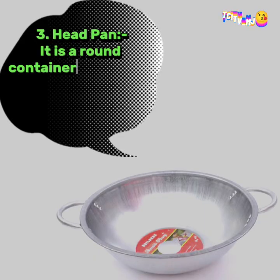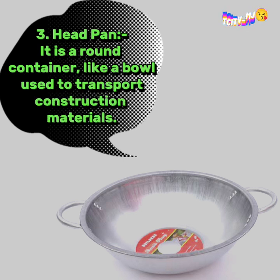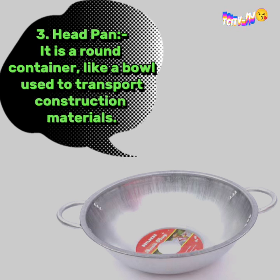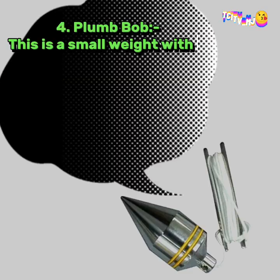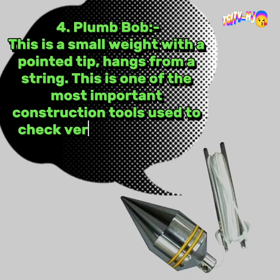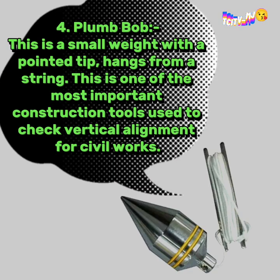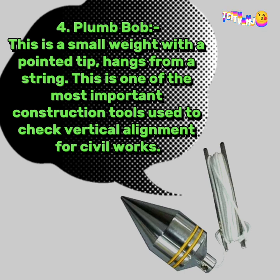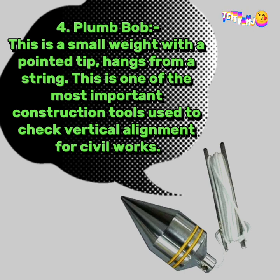3. Headpan: it is a round container like a bowl used to transport construction materials. 4. Plumb Bob: this is a small weight with a pointed tip that hangs from a string. This is one of the most important construction tools used to check vertical alignment for civil work.